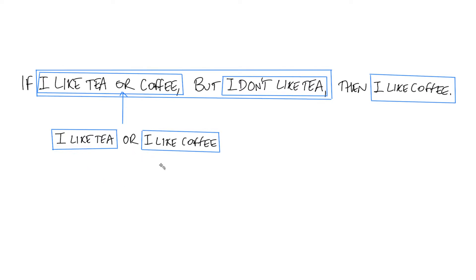From here, it would be a good idea to introduce some variables, because I have pieces that I can't break down any further. I have 'I like tea' — let's call it P, so P is either true or false. And 'I like coffee' is also either true or false, so let's call it Q. There's another instance of 'I like coffee' over here, so that's also Q. And finally, 'I don't like tea' — this is false when P is true, and true when P is false, so this is the negation of P, written as not-P. That's the symbol for not in a propositional formula.